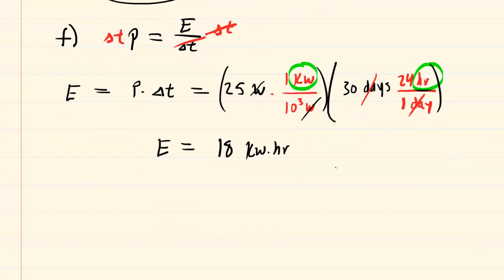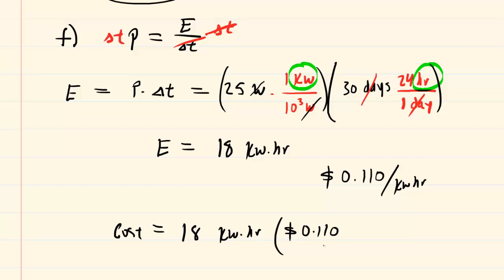But then we were told that the electric company charges about 11 cents per kilowatt hour. So all we will do to get the total cost is take the number of kilowatt hours that we obtained, multiply that by the rate at which they charge, 11 cents per kilowatt hour. We multiply this out, and we end up with $1.98. So this would be the final answer to part F.